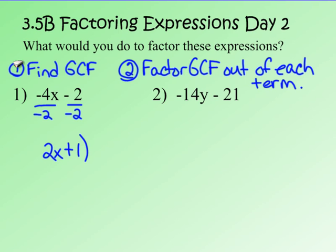Negative 2 divided by negative 2 is positive 1. Put the parentheses around it and pull my common factor out in front of that parentheses. So the factored form of negative 4x minus 2 is negative 2 times the quantity 2x plus 1. I can check to be sure I have it factored correctly — first, does 2x and 1, what's inside my parentheses, have anything in common? 2x and 1 do not have any other factors in common, so that part is factored correctly.